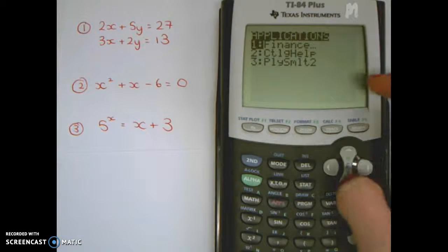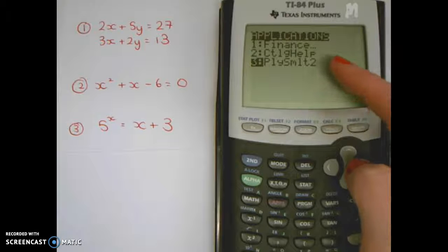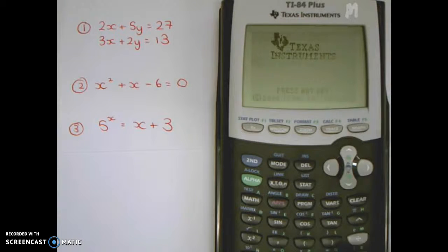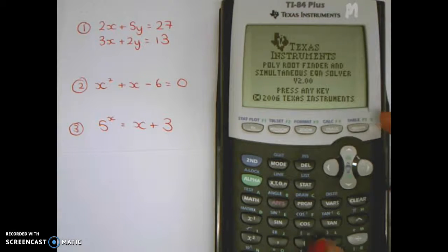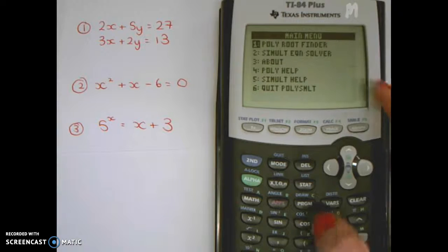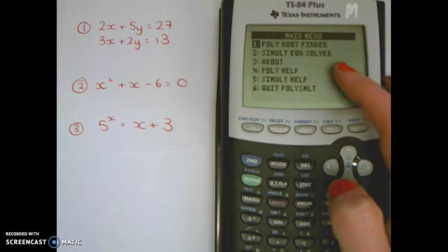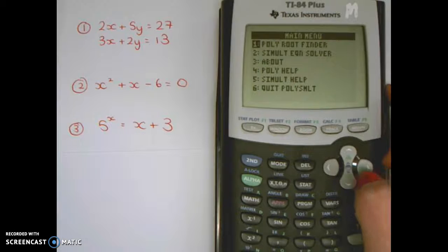The one you're looking for is PolySmlt, P-L-Y-S-M-L-T. When you go into this, it says press any key. Just press a number, and then you've got some help for finding things.